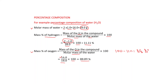You can also find mass percent of oxygen by subtracting 11.11 from 100, which again gives 88.89%. This works because the sum of mass percentages of all elements present in a compound will be nearly equal to 100. So if only two elements are present and you know the mass percent of one, the other can be found by subtraction.